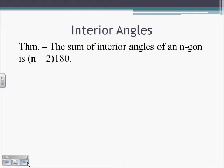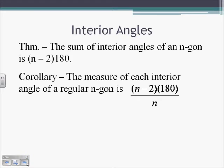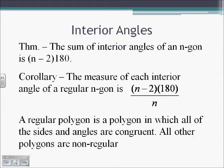So n is equal to the number of sides. The corollary to that theorem: the measure of each individual interior angle of a regular n-gon is going to be n minus 2 times 180, divided by n, where n is the number of sides and also the number of interior angles. If we take the total degrees it has to add up to, a regular polygon means each angle is equal to each other, so dividing the sum of interior angles by the number of angles gives us what each angle equals.